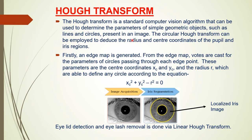The Hough transform is a standard computer vision algorithm that can determine the parameters of simple geometric objects such as lines and circles present in an image. The circular Hough transform is employed to deduce the radius and center coordinates of the pupil and iris regions. An edge map is created; votes are cast for the parameters of circles passing through each edge point into an accumulator matrix initialized at zero. The maxima is found in that accumulator matrix — the parameters corresponding to the maxima position give the desired circle. Eyelids and eyelashes are removed via the linear Hough transform.